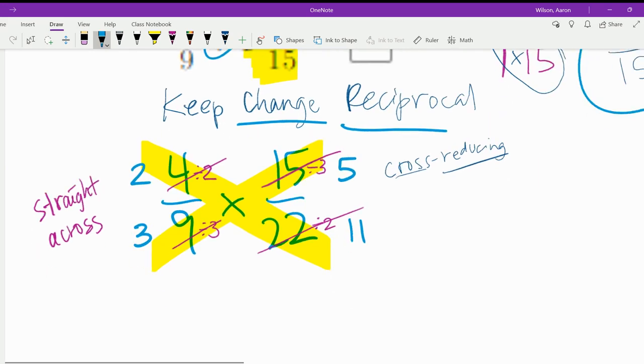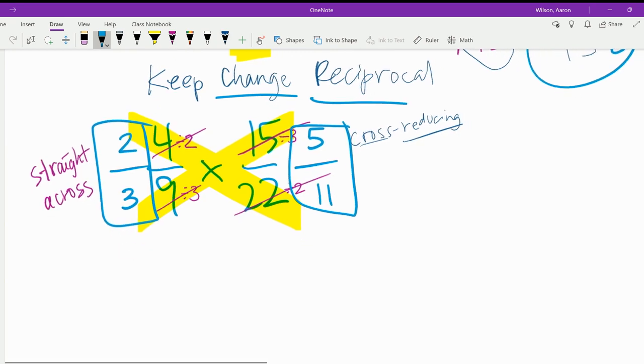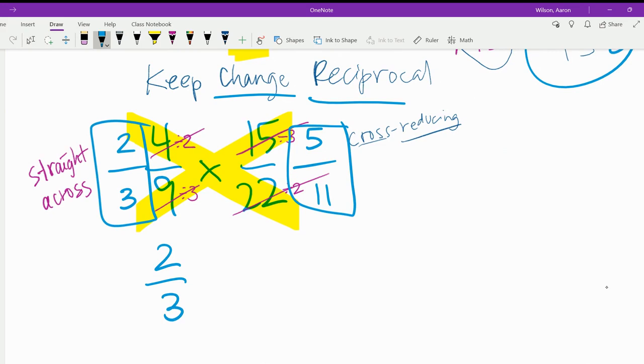So now the new fractions, they look smaller, but they're not smaller. They're simpler. So now all we have to do is 2 thirds times 5 elevenths. That's pretty simple.